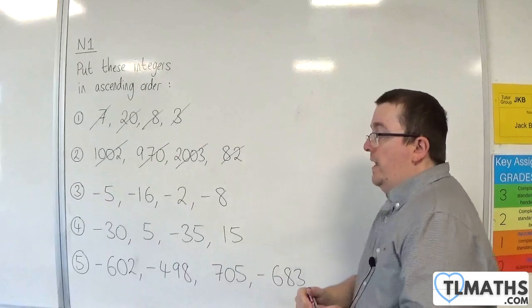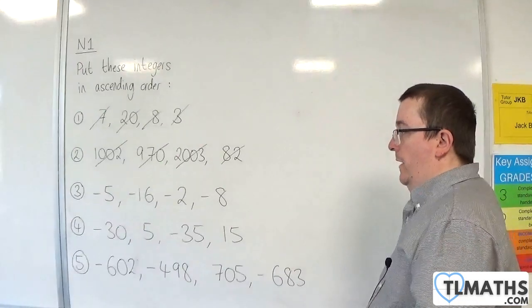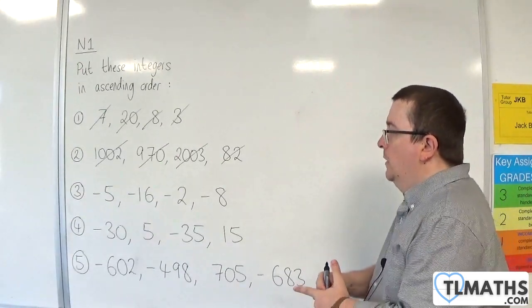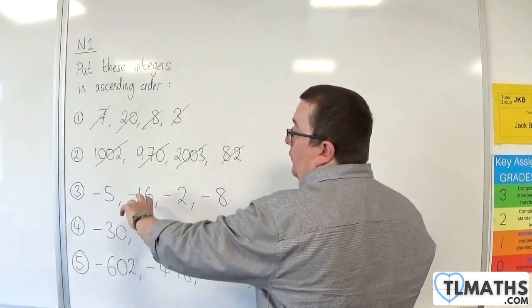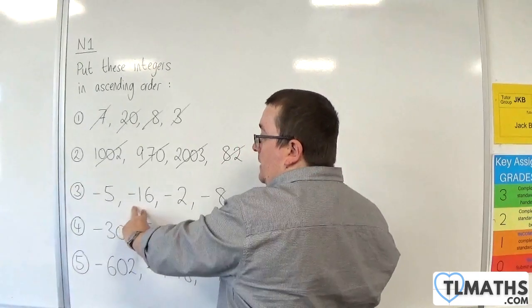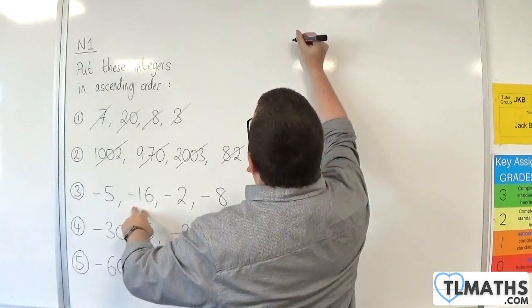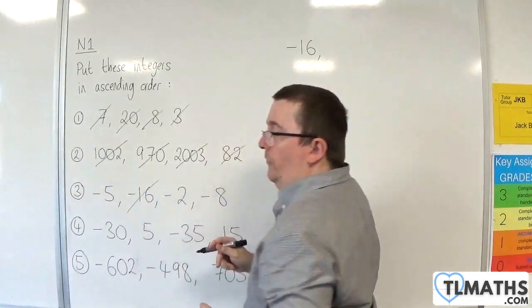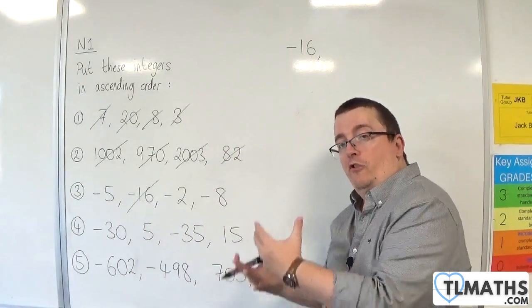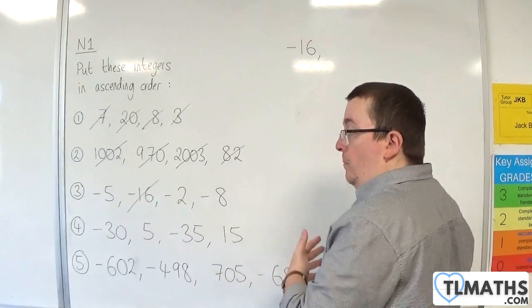For number 3, we're going into negative integers. When we talk about negative integers, the smallest is the most negative, so the smallest here is minus 16. If you want to, you can think of these as temperatures going from the coldest to the warmest.